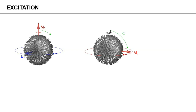We can now adjust this angle, alpha, which is referred to as the flip angle or rotation angle, to be, for example, exactly 90 degrees — then it is referred to as an excitation. We can also make alpha 180 degrees, and then it rotates all the way to the minus z-axis, and then the magnetization is said to be inverted.